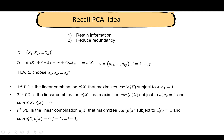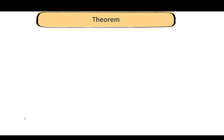So those are the p principal components and their constraints. This terminology tells you what restrictions these principal components must satisfy, but not exactly how to calculate them. The theorem we're about to look at will tell us exactly how to obtain those principal components — how to obtain the coefficients, the a's.